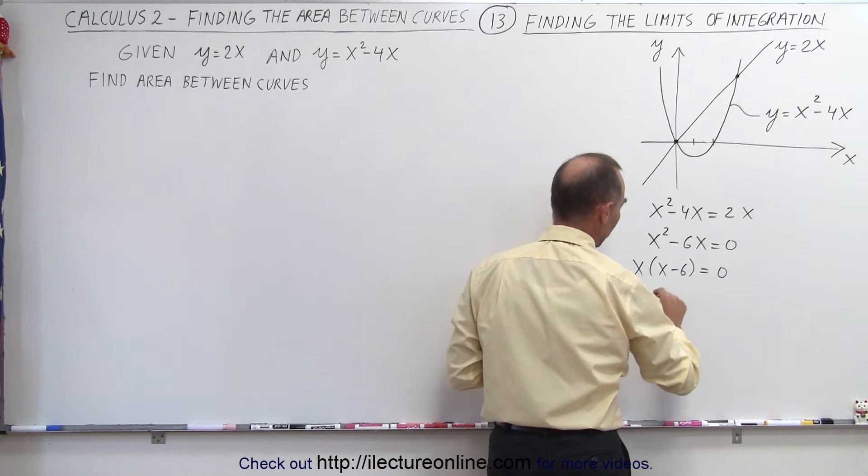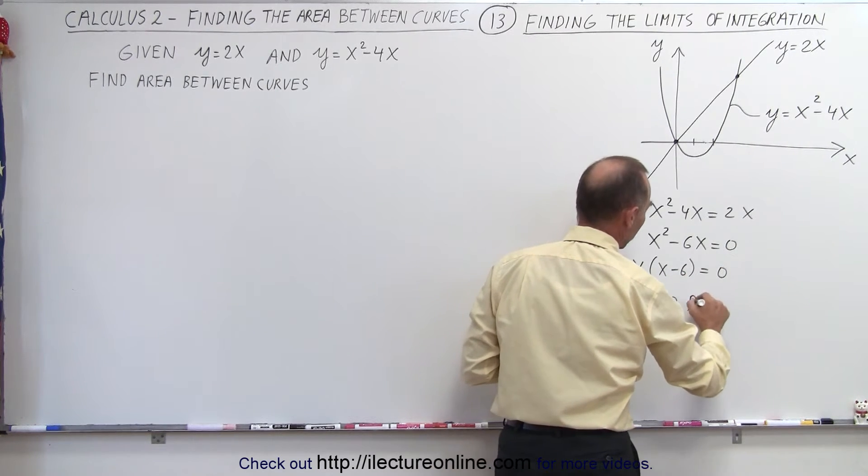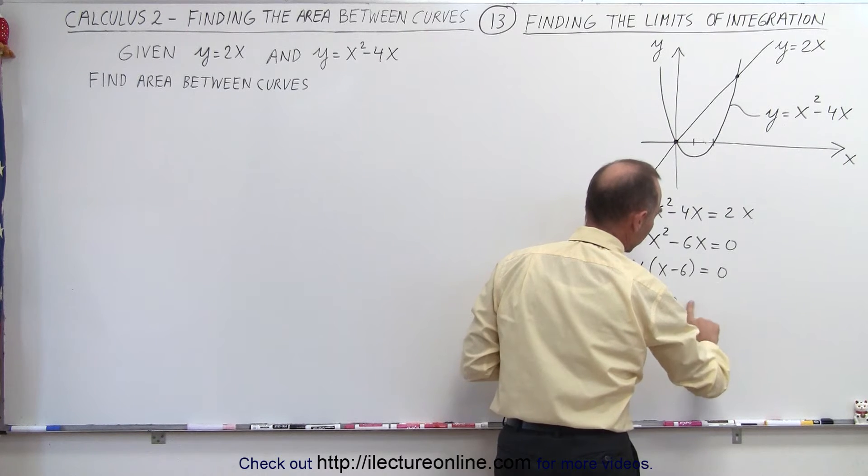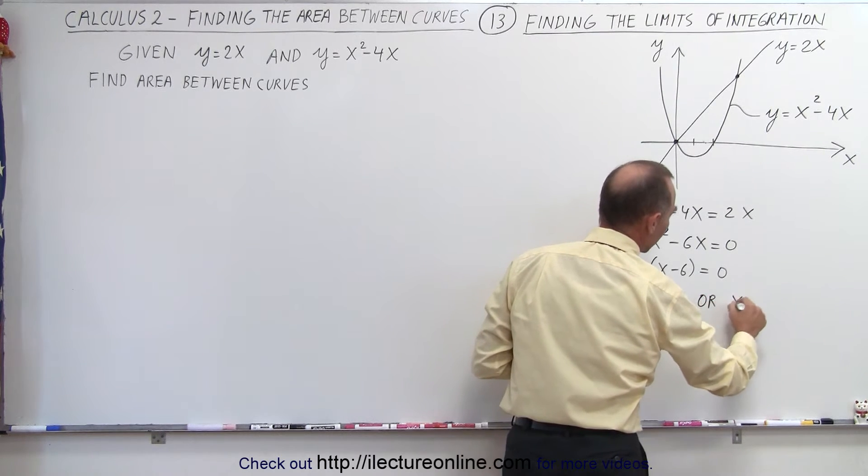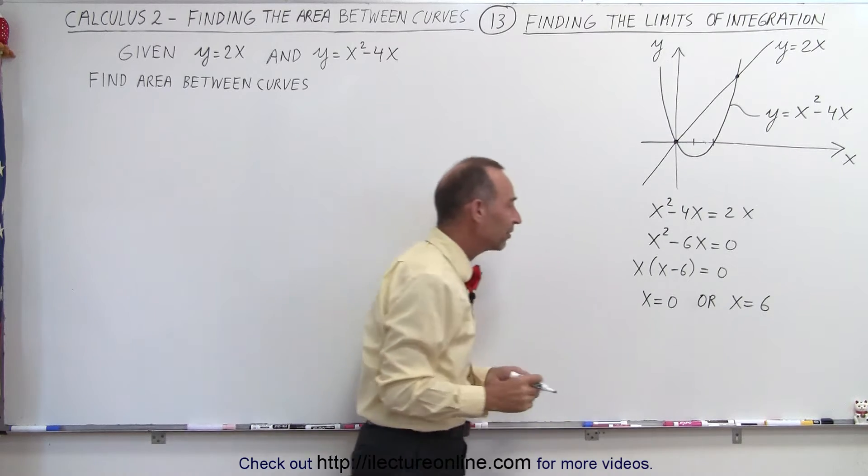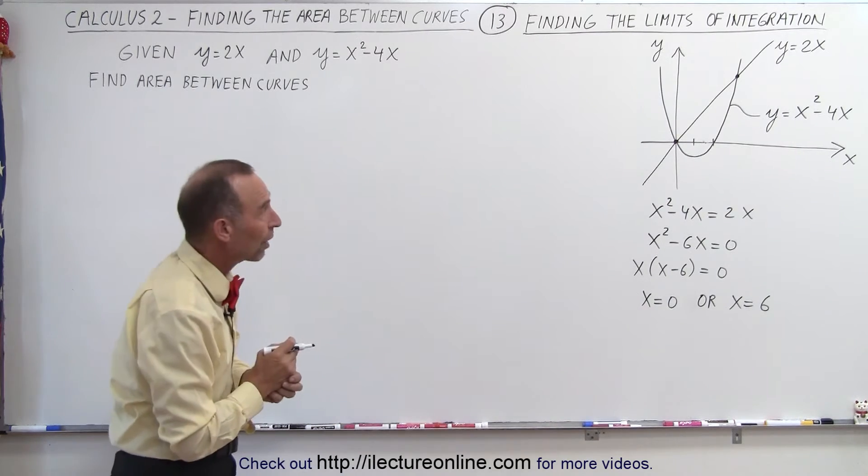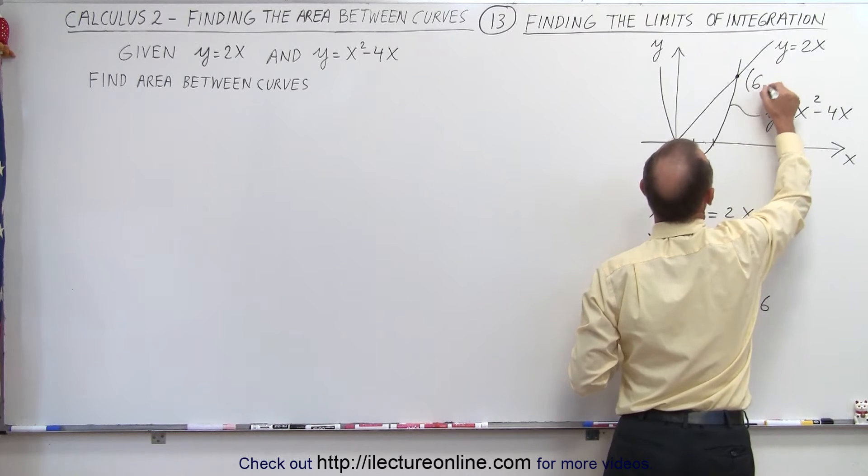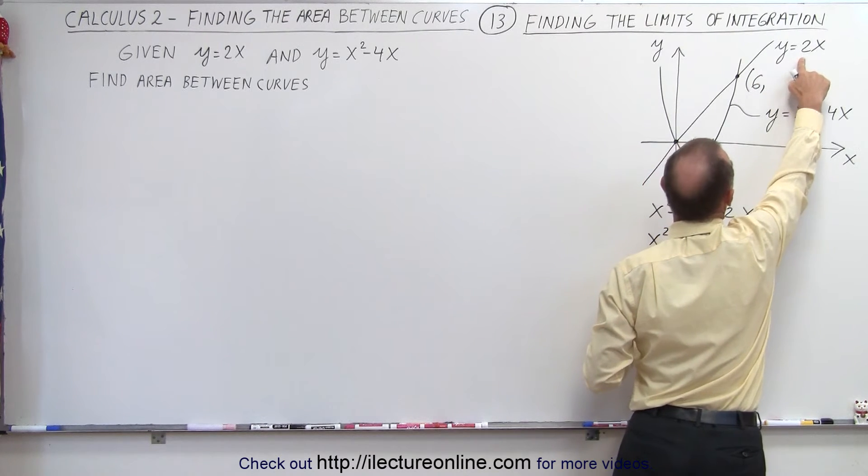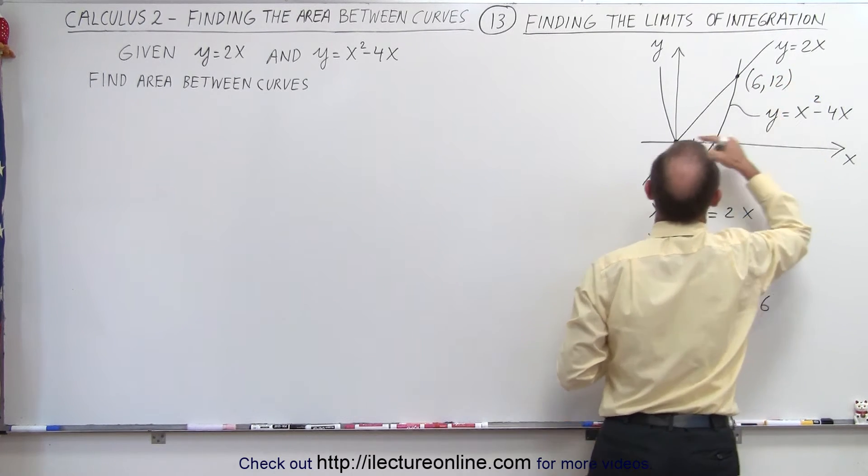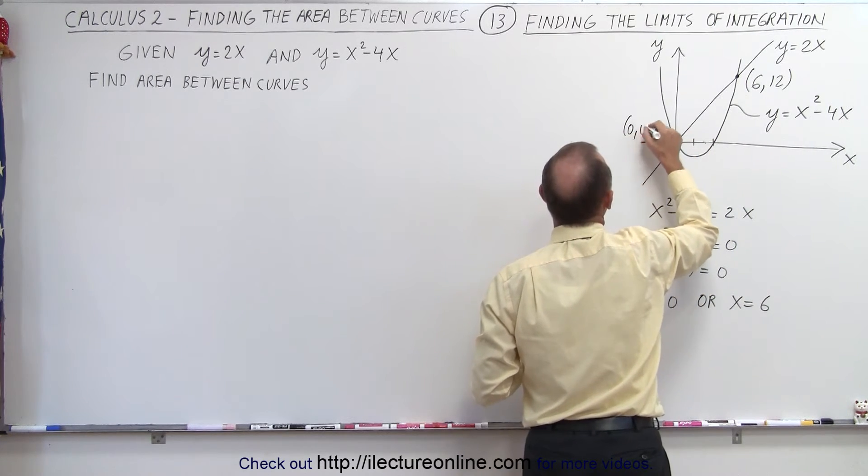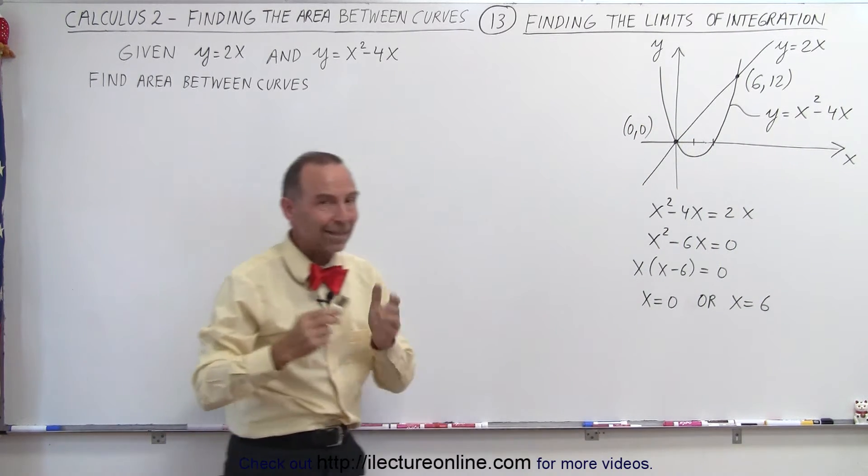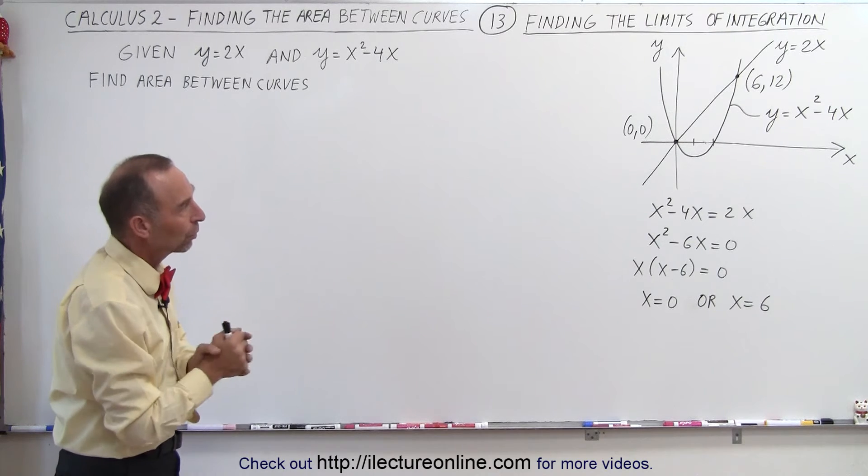Sure enough, when x equals zero or x equals 6 are the two places where the two curves cross one another. So that means here this is equal to 6 comma, when we plug in 6 we get 12 for the y value, and here we get 0, 0. So that gives us the x and y coordinates of the two places where the two functions cross.